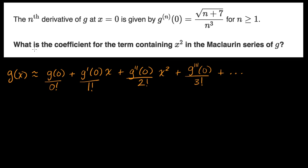But we just care about, they're just asking us what is the coefficient for the term containing x squared. So they just want us to figure out this, what is this thing right over here? So to know that, we need to figure out what is the second derivative of g evaluated at x equals zero.